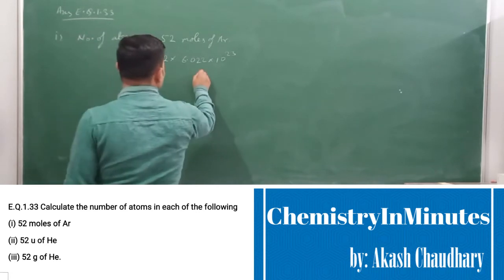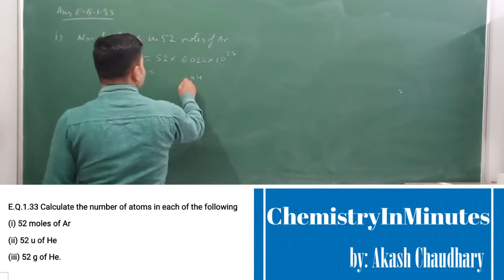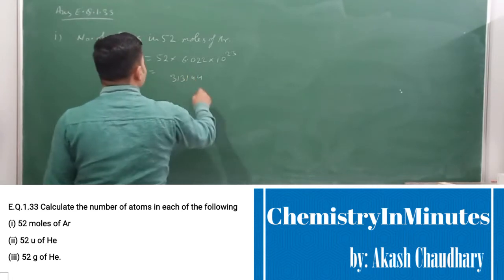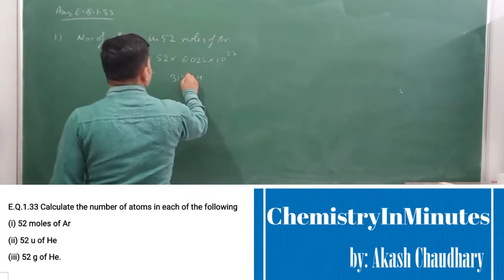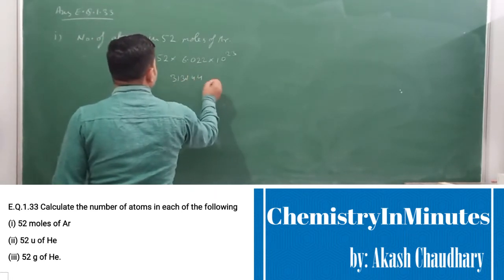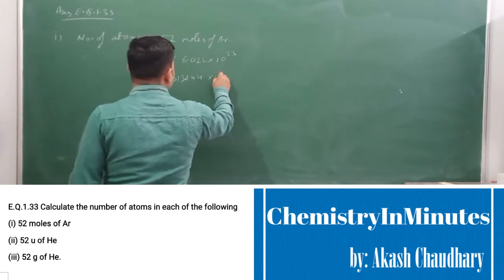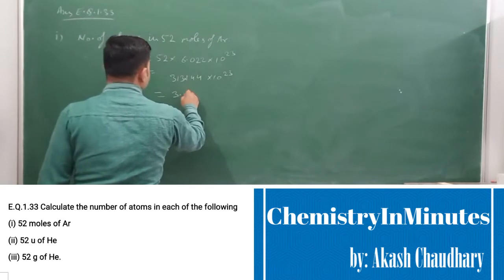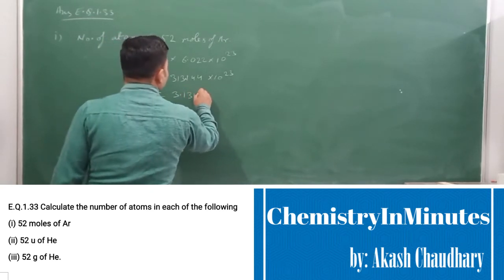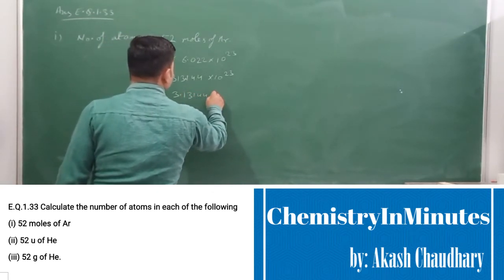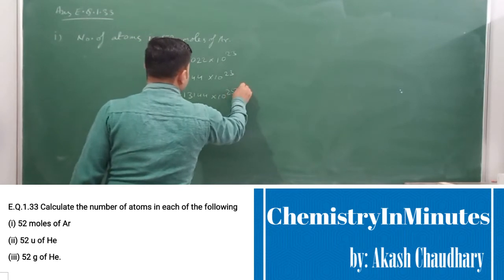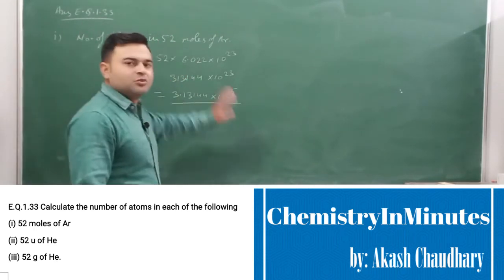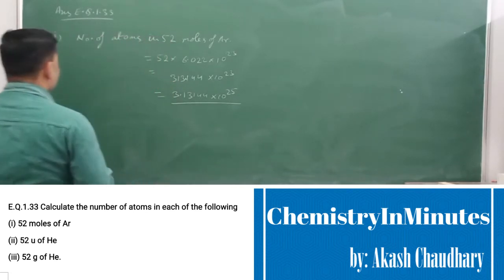This comes out to 3.13144 × 10²³, or finally we can write 3.13144 × 10²⁵. So this will be the number of atoms in 52 moles of argon.